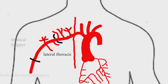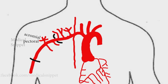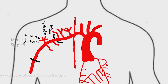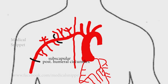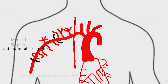The thoracoacromion artery splits into four branches: pectoral, acromial, clavicular, and deltoid. The third part of the axillary artery gives rise to three branches: the subscapular artery, the posterior humeral circumflex artery, and the anterior humeral circumflex artery.